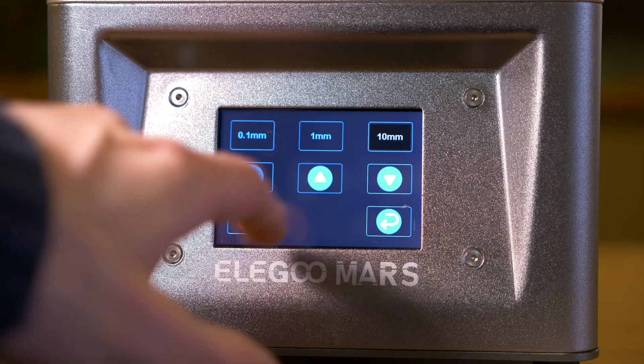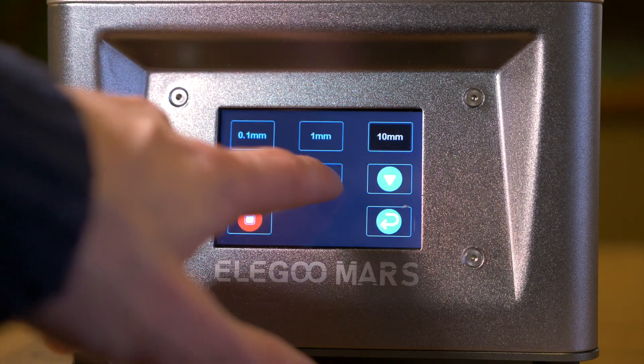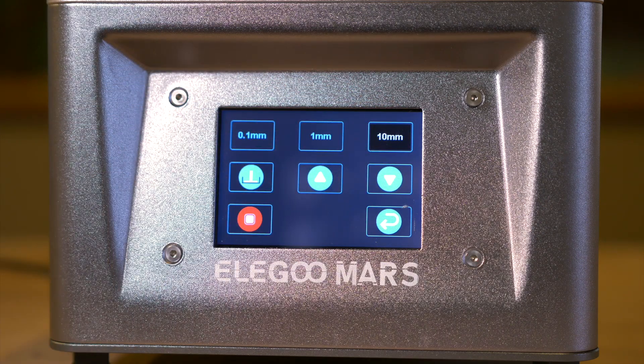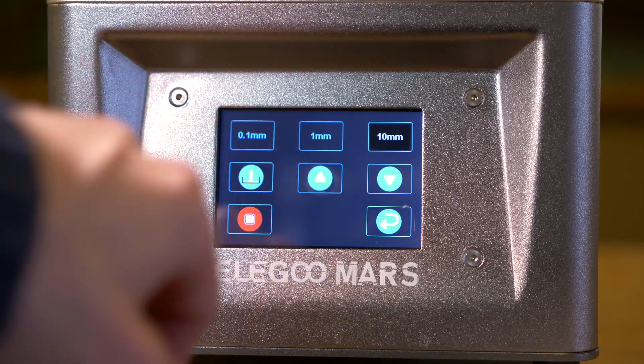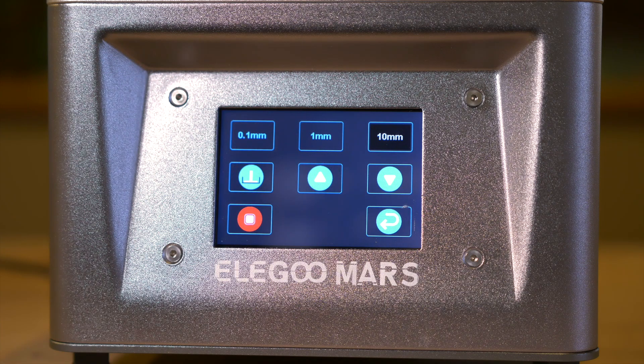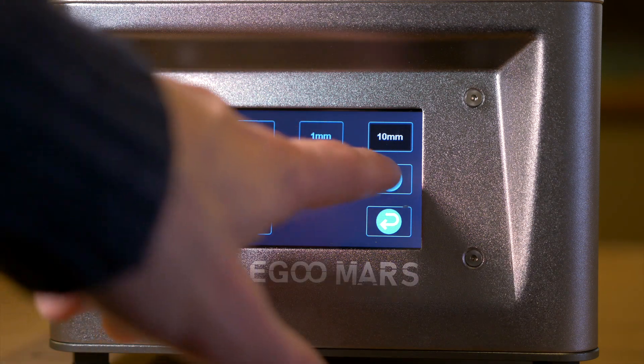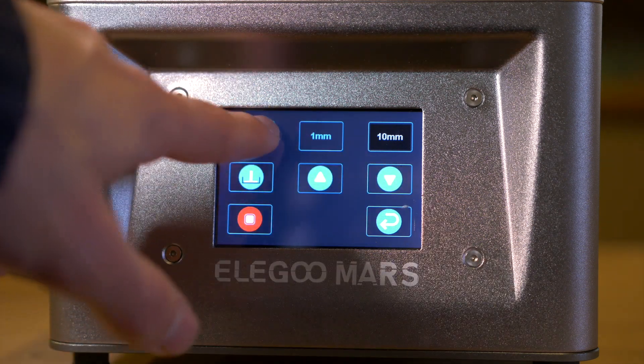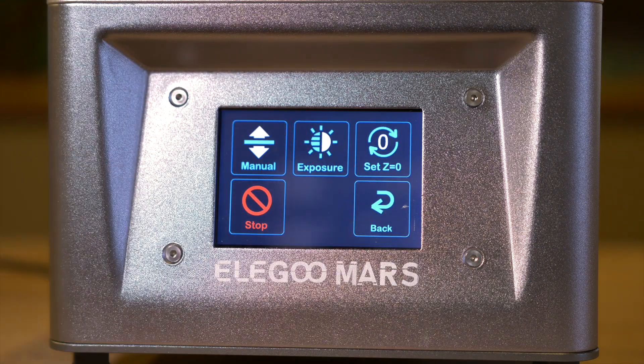It's not possible to control this printer from your computer or over the network but the included flash drive comes with pre-sliced files ready to print. Almost all of the mechanical parts of this machine are made from metal, with the exception of the resin vat thumb screws and the bed release thumb screw. The bed and resin vat are easily removed without any tools and this makes it quick and easy to get up and running.